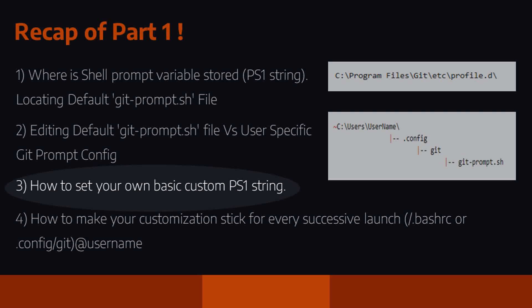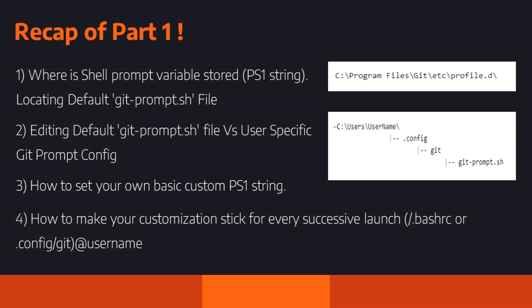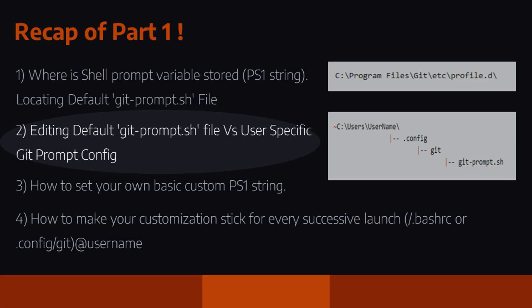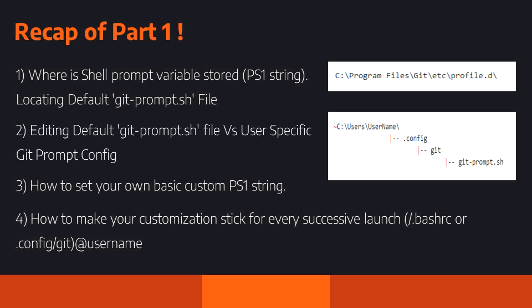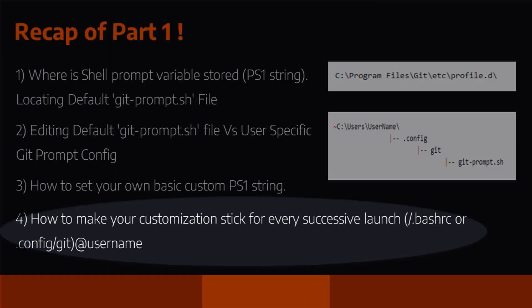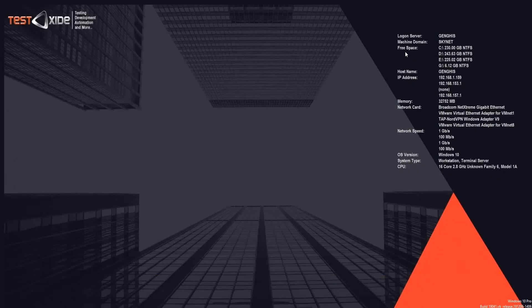By customizing the PS1 variable value you can customize your default Git Bash prompt and the window title. Rather than modifying the original git-prompt.sh file, you should create a user config using XDG and store your customization there, so that on successive launches of Git Bash your settings are retained and the customization gets into effect.